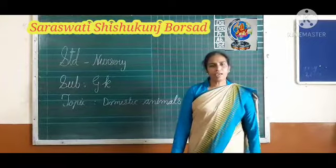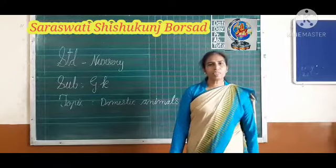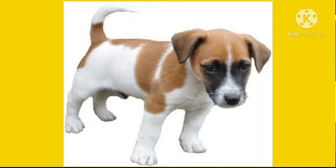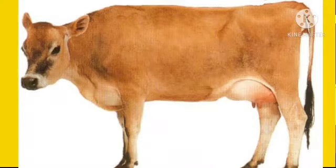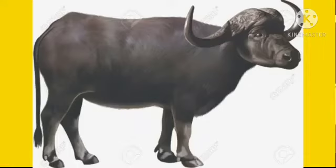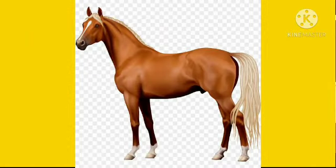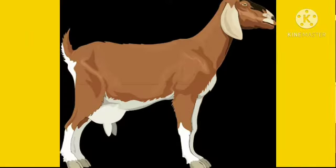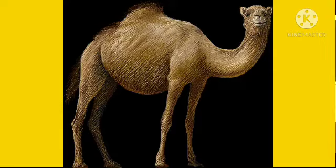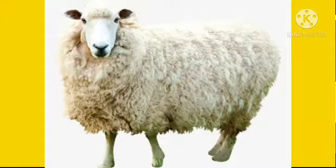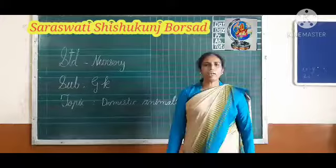Which animals do you see around you? The dog, cat, cow, buffalo, horse, goat, donkey, camel, and sheep.